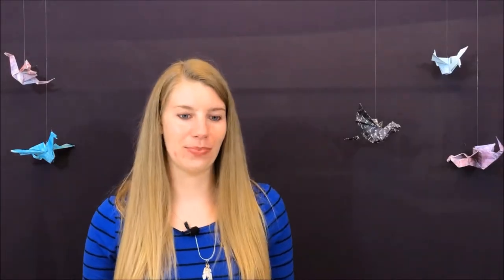The beginning of the Dragon Book quotes Abram Davidson. He says, 'Although the wombat is real and the dragon is not, nobody knows what a wombat looks like, and everyone knows what a dragon looks like.' This is very true for aspects of a lot of genres — but it's also a double-edged sword. Yes, you can just say 'dragon' and most people can imagine what that looks like, which will save you words. But it also means it's easy to fall back on the stereotype instead of making it your own.